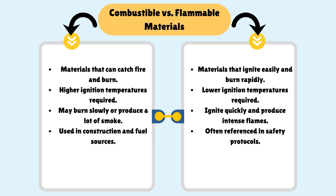Here is a graphic organizer about combustible materials and flammable materials. Combustible materials: can catch fire and burn, higher ignition temperatures required, may burn slowly or produce a lot of smoke, used in construction and fuel sources. Flammable materials: ignite easily and burn rapidly, lower ignition temperatures required, ignite quickly and produce intense flames, often referenced in safety protocols.